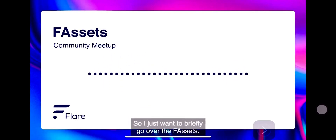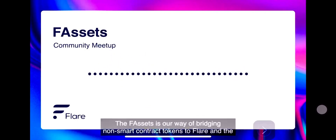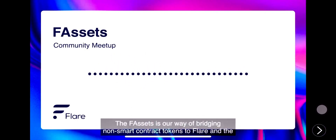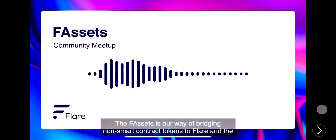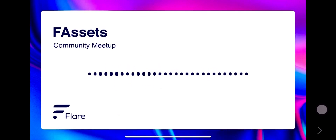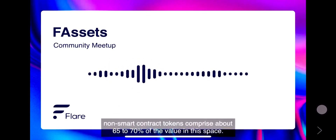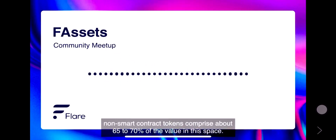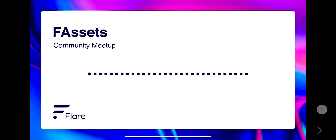Briefly go over the F assets. The F assets is our way of bridging non-smart contract tokens to Flare. The non-smart contract tokens comprise about 65 to 70% of the value in the space.